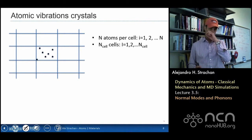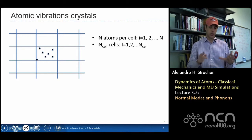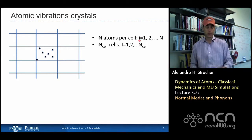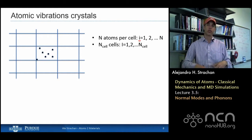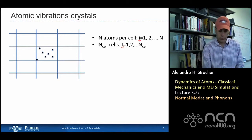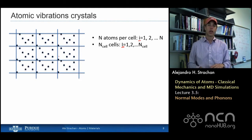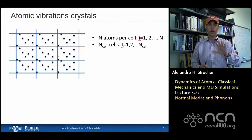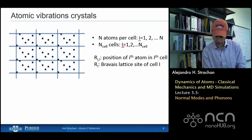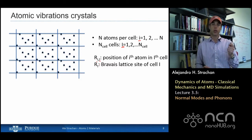Now what happens in a crystal? Let's say I have a crystalline system described as a Bravais lattice, and inside each Bravais cell I have n atoms. I'll describe each atom with lowercase i, going from 1 to n, and I'll have many cells denoted by capital I — potentially infinitely many. The group of n atoms in a unit cell is repeated over all cells. I'll call r_{i,I} the position of the i-th atom in the capital-I-th cell, and R_{capital I} is the Bravais lattice vector for each cell — the origin of each simulation cell.